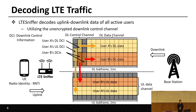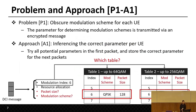However, decoding LTE traffic is non-trivial because the sniffer faces several problems. The first problem is that the sniffer does not know the modulation scheme for uplink and downlink packets, because the parameter for determining the modulation scheme is transmitted via an encrypted message. To solve this, LTE Sniffer tries all potential parameters to decode the first packet, then stores the correct parameters in a database to decode future packets for the same user.